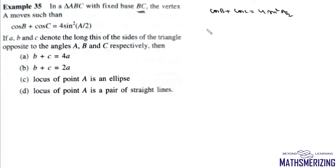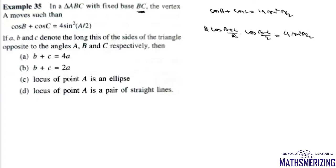We know that cosC + cosD = 2cos((C+D)/2)·cos((C-D)/2), so cosB + cosC = 2cos((B+C)/2)·cos((B-C)/2), and this equals 4sin²(A/2).